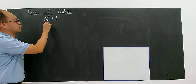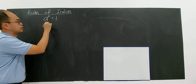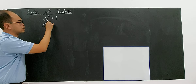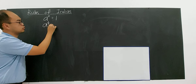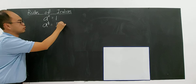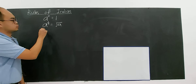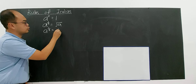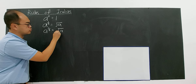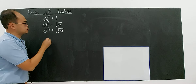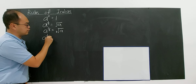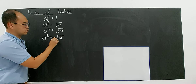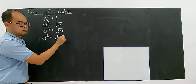If you have A to the power of 1 over 2, you will get the square root of A. If you have A to the power of 1 over 3, you will get the cube root of A — we just write a small 3 here. And if you have A to the power of 1 over 5, you will write it as the 5th root of A.